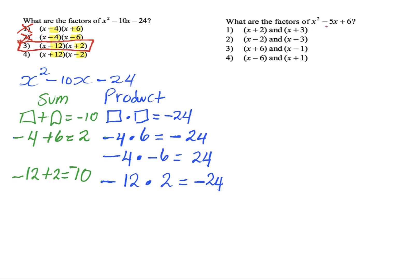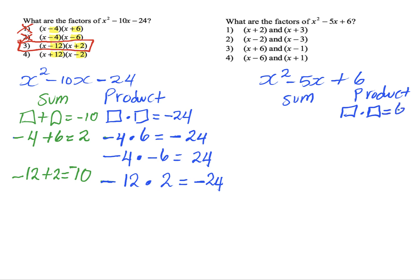Next problem: what are the factors of x squared minus 5x plus 6? The 6 represents the product and negative 5 represents the sum. We're looking for two numbers that when we multiply them, we get positive 6, and when we add them, we get negative 5. Let's try the first factors: positive 2 and positive 3. Positive 2 times positive 3 gives positive 6 — the product works. But positive 2 plus positive 3 equals positive 5, and we're looking for negative 5. So we can exclude answer 1.